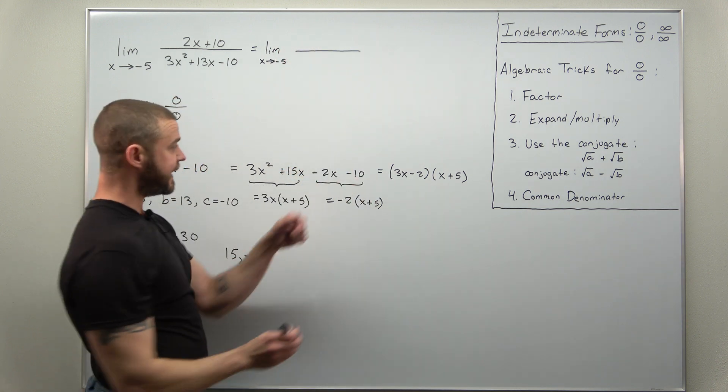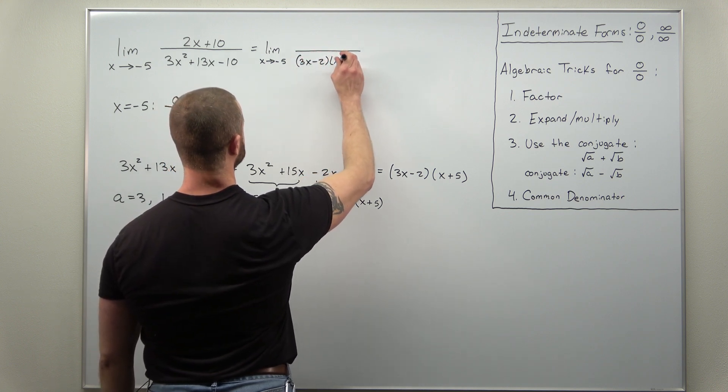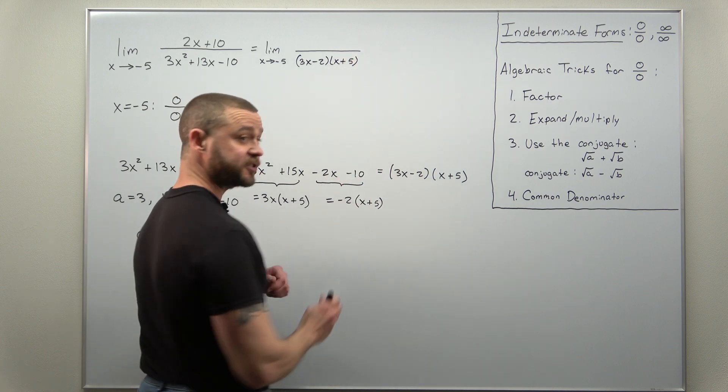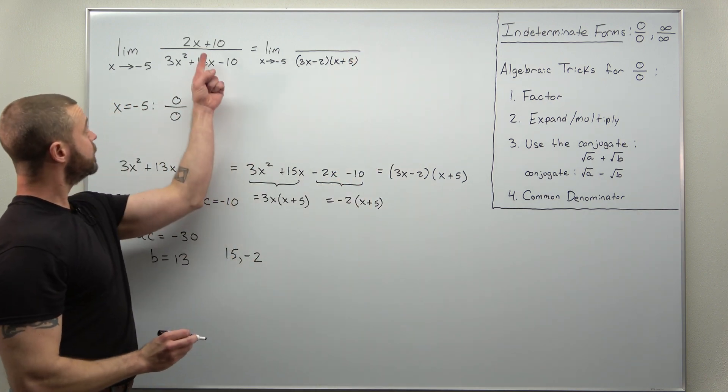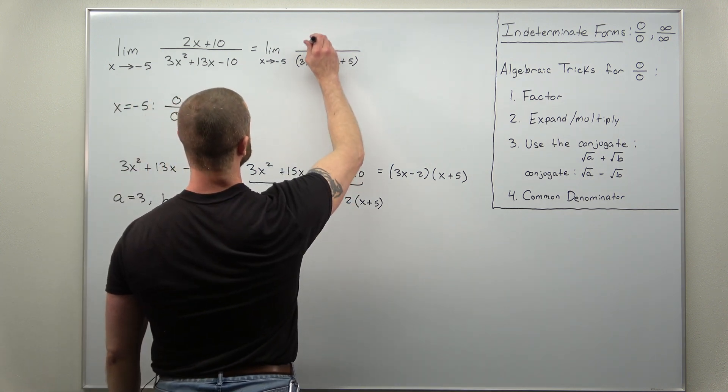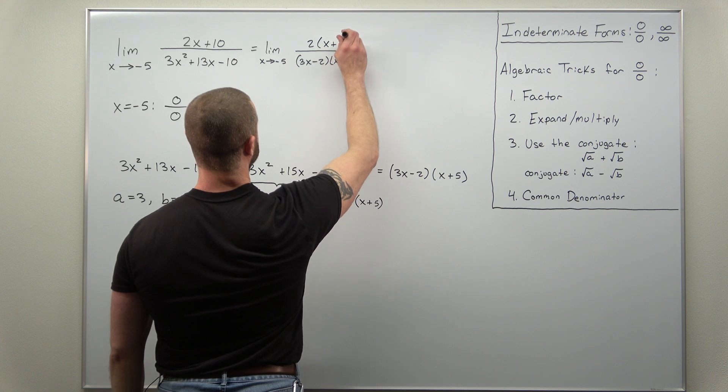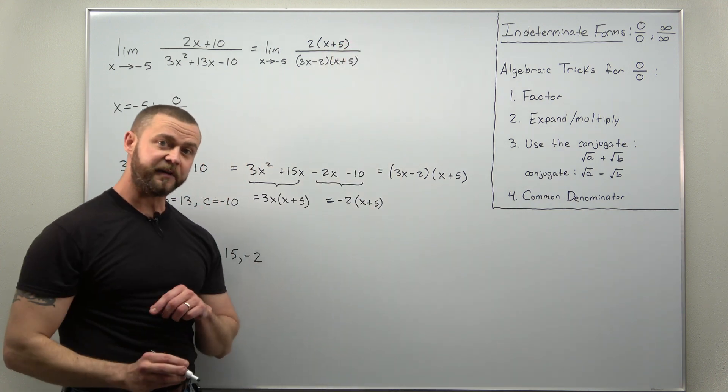So let's write that in. We have factors 3x minus 2 and then times x plus 5. And the numerator we're going to factor out positive 2 times x plus 5.